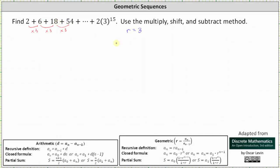And now to find the sum using the multiply, shift, and subtract method, we begin by writing an equation equal to the sum which is s equals 2 plus 6 plus 18 plus dot dot dot. We know the last term is 2 times 3 to the power of 15. The second to last term would be 2 times 3 to the power of 14.